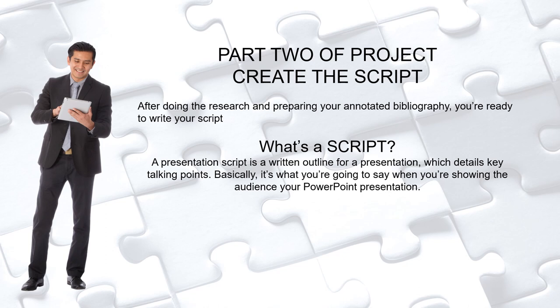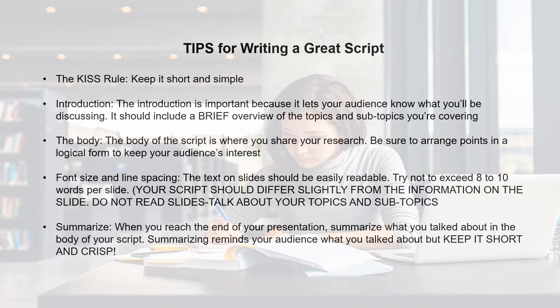Now you have the first step down because you understand what an annotated bibliography is. So let's look at part two: creating the script. A script is simply a written outline for a presentation — basically, it's what you're going to say when you're presenting to your audience. Think of a movie script; it's sort of like that. There are some good tips for writing a great script, with one of the most important being the KISS rule: keep it short and simple. Your script should include a brief introduction, the body, and a summary, much like an essay or a research paper.